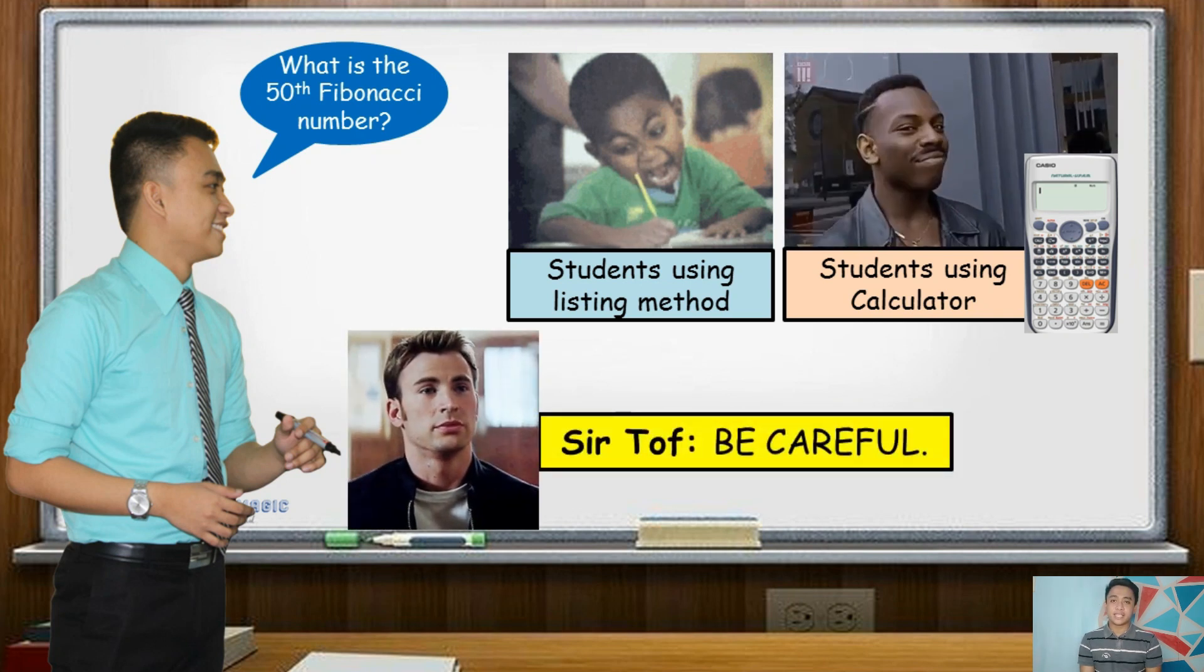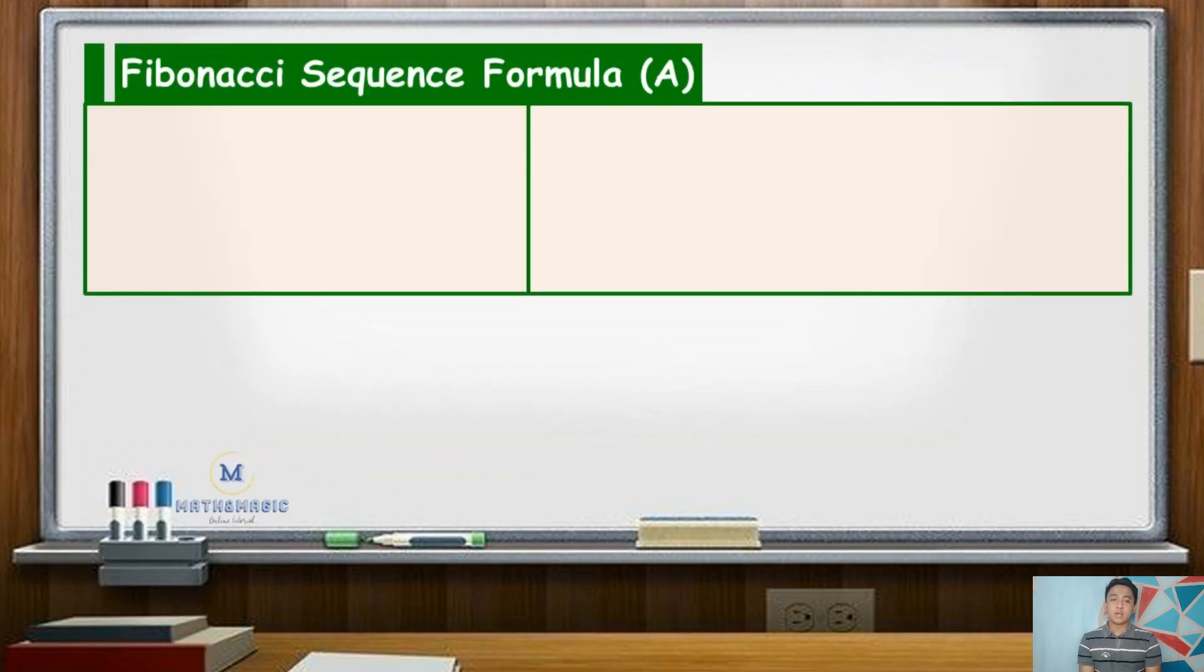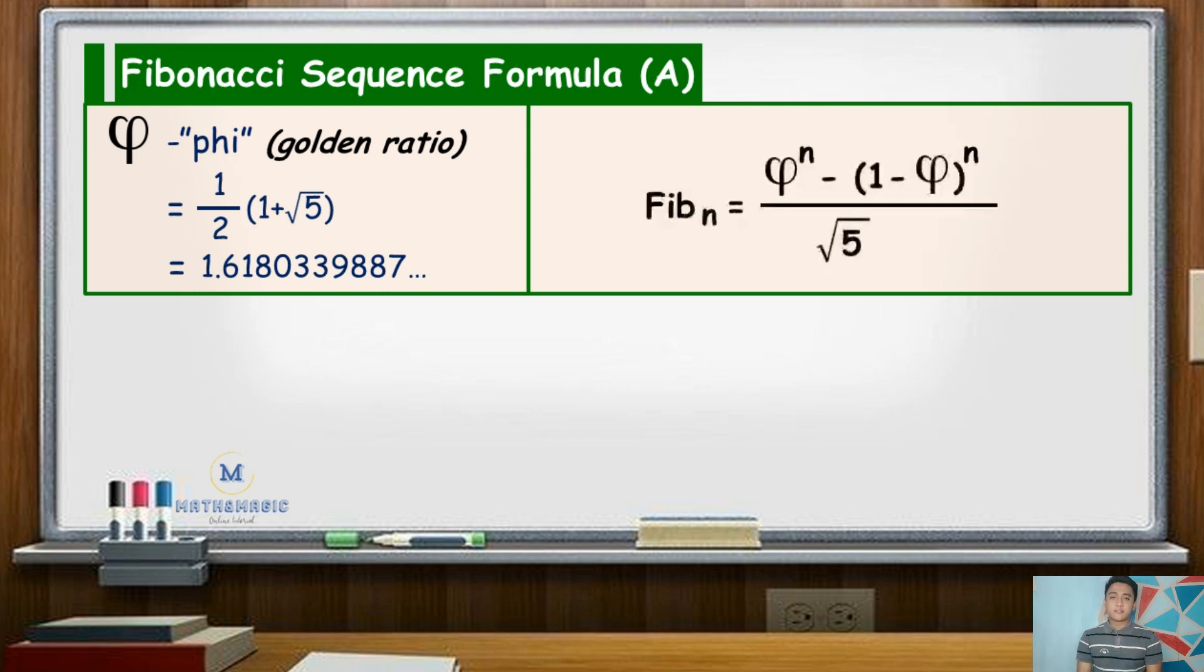Another method in identifying the nth term of a Fibonacci sequence is using the golden ratio. It is equivalent to one-half of quantity 1 plus square root of 5, or approximately equal to 1.618034 and so on.